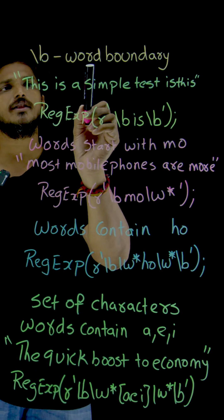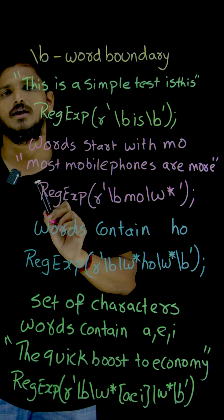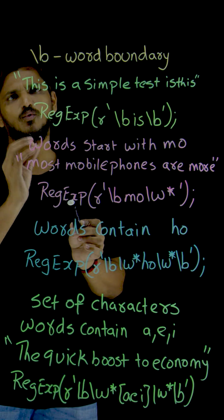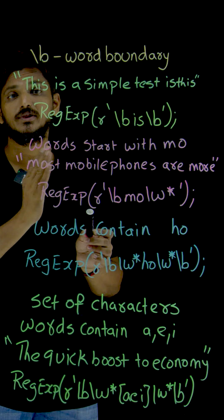Slash b is used for word boundary. What's that mean? Let's understand when we use slash b with an example.